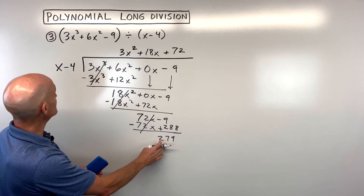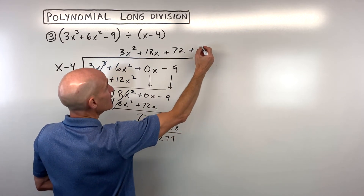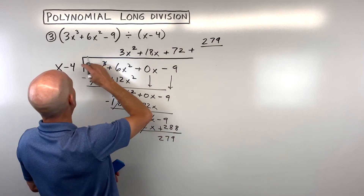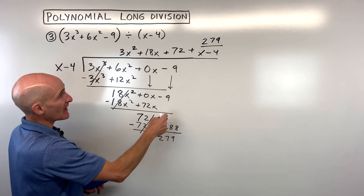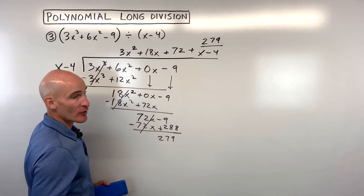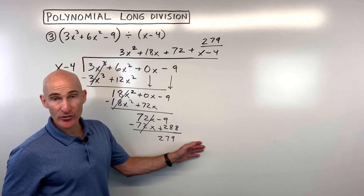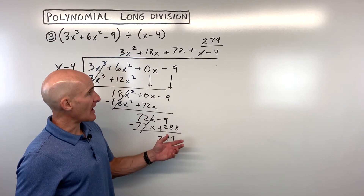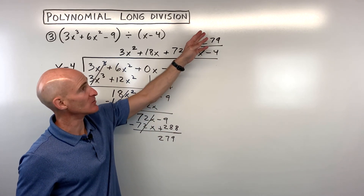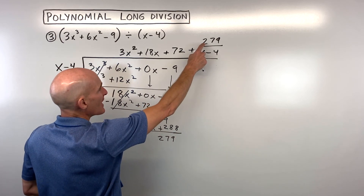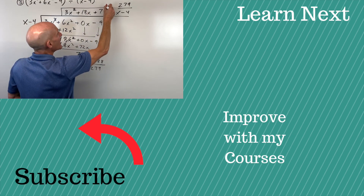This 279 is a constant (zeroth degree), while the divisor's leading term is first degree, so this is our remainder. The final answer is written with plus 279 over x minus 4. If it had come out to negative 279, you could write minus 279 over x minus 4. In general, I usually write plus whatever the remainder is over the divisor. That's our final answer.